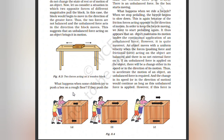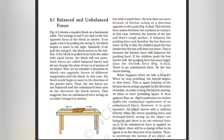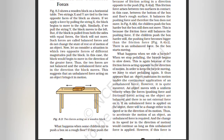What happens when some children try to push a box on a rough floor? They push the box with a small force — the box does not move because of friction acting in a direction opposite to the push. This friction force arises between two surfaces in contact, in this case between the bottom of the box and the floor's rough surface. It balances the pushing force and therefore the box does not move. Children push the box harder but the box still does not move because the friction force still balances the pushing force. If the children push even harder, the pushing force becomes bigger than the friction force — this is an unbalanced force — so the box starts moving.